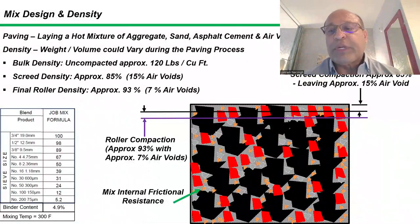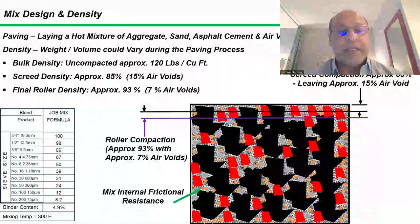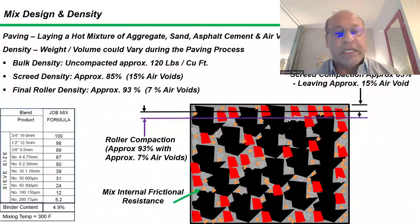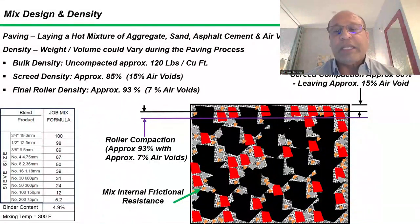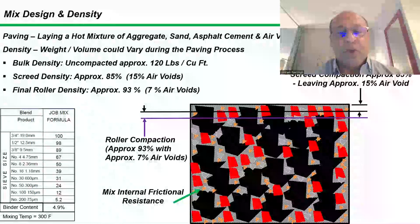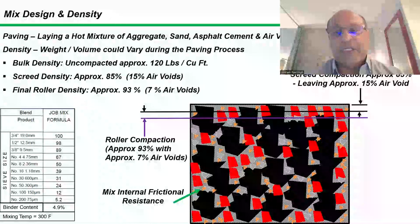It's important that we manage segregation, which is also what's driving the surface uniformity. Let's say the screed compacts the mix at 85%, leaving about 15% air void. And then the roller comes by and compacts it to 93%, which would leave about 7% air void. So at any time for that screed setup, for that roller chain train, if the mix internal frictional resistance changes, then the compaction will change.